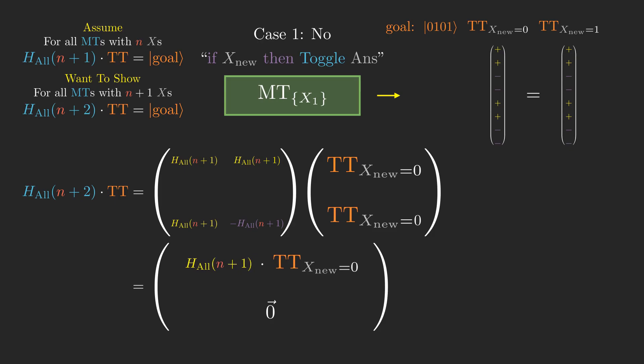The inductive hypothesis tells us that h all of n plus 1 times tt x new equals 0 equals the goal state for that version of mystery toggles, which gives us the final n plus 1 bits of our desired goal state, the bits for x1 through xn and answer. And since the bottom half of our state vector is the 0 vector, we know that the first bit of the state is 0, which is correct, since the goal state should have a 0 in the bit for x new.